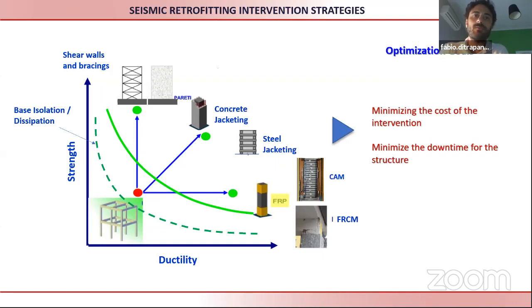As you know, when we want to decide strategies for the intervention, we can move towards ductility increase or strength increase. We have several opportunities of retrofit methods for structures. Another possibility is base isolation. In base isolation we will change the demand, as you can see, switching from the green line to the dashed line below.